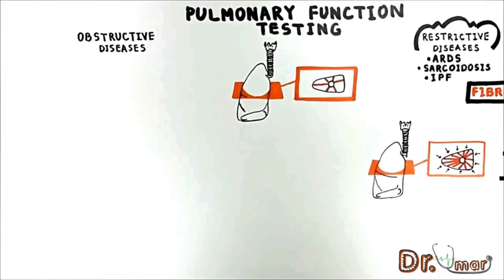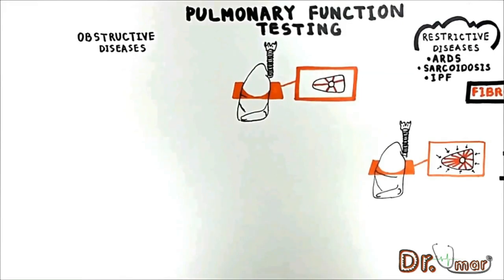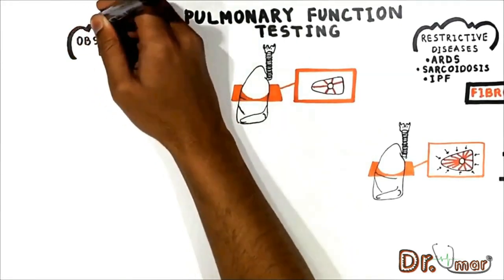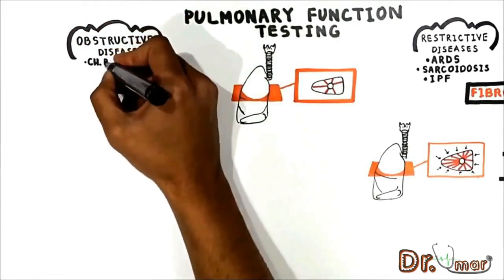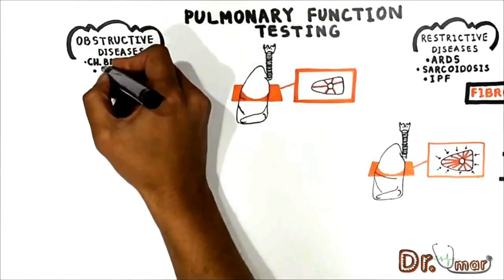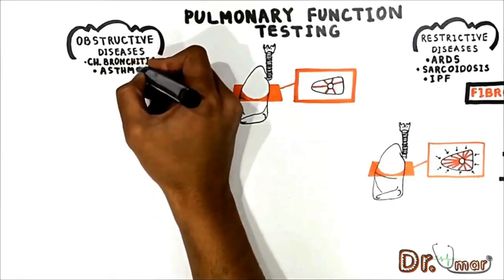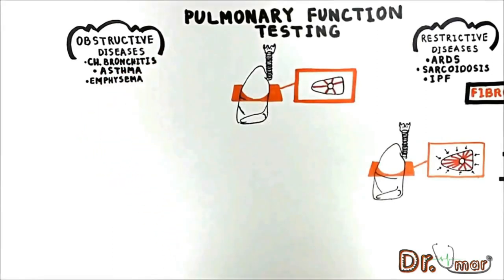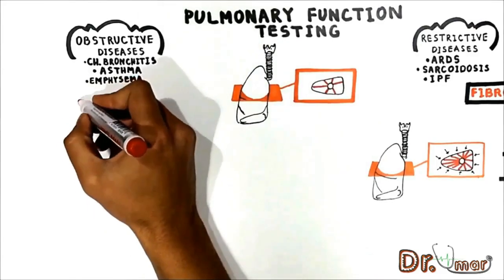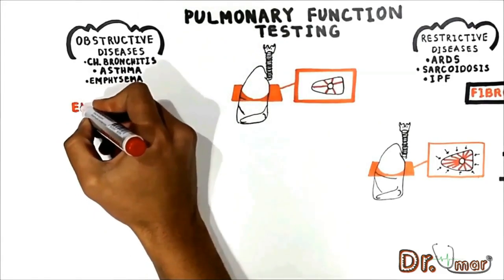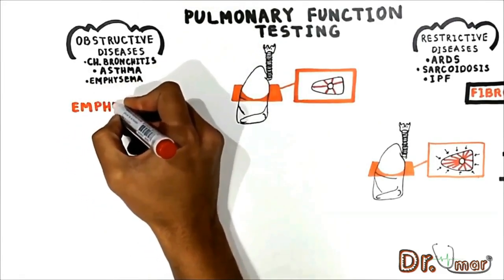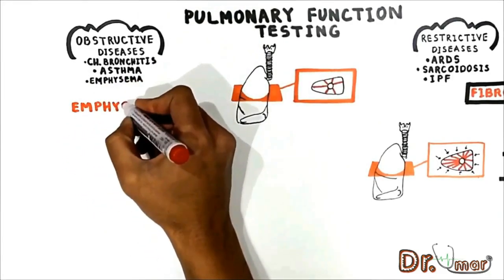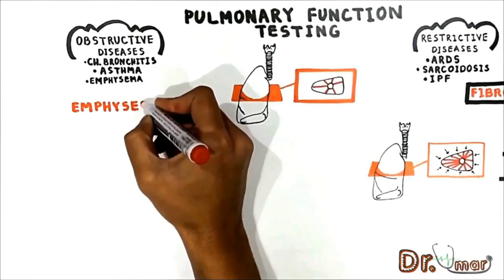The situation is inverse in obstructive disease, which includes chronic bronchitis, asthma, and emphysema. Let's see what happens with the lung given the example of the most classic form of obstructive disease — emphysema.